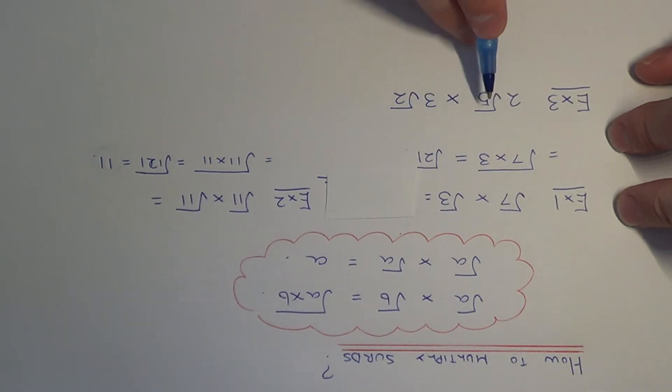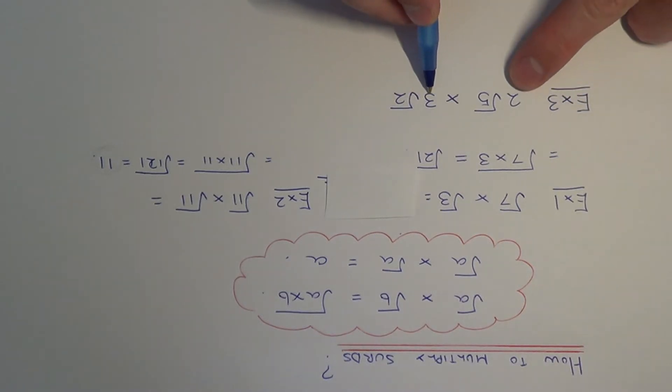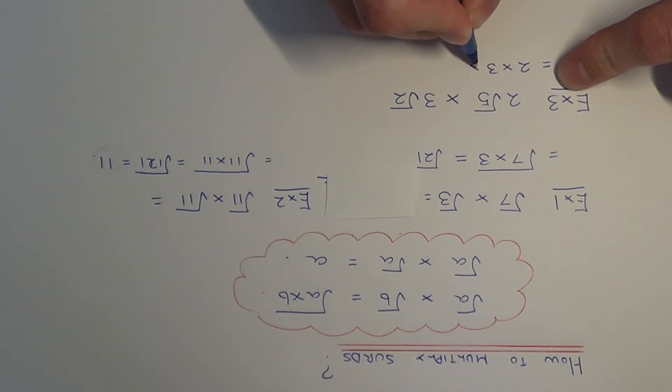Let's move on to example three. This time we've got two root five times three root two. We've got whole numbers before our surds, so we need to multiply these together as well, then multiply the surds. We can change the order and write it as two times three times root five times root two.